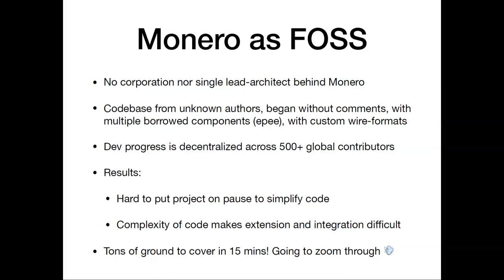Monero is a free and open source project. There's no corporation or a single lead architect behind it. Its code base, as a few other people have touched upon, is from unknown authors, began without comments — or the comments were sort of intentionally ripped out. It borrowed multiple components from somewhat unknown sources, one of which is a library known as Epee, which is sort of like a utility class. It also has these custom wire formats, which are pretty strange. Development progress is decentralized across hundreds of contributors around the world, so it's a massive open source project.